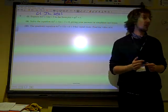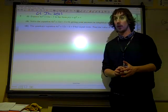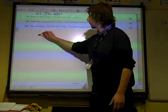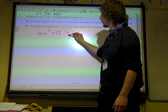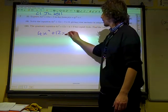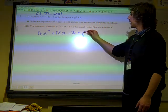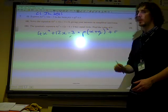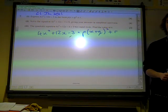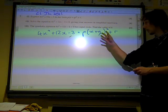Express 4x squared minus 12x minus 3 in the form that's given there. We've got two choices, various ways that we do these. I think for something like this we're going to take the easiest possible route and do it the comparing coefficients way.